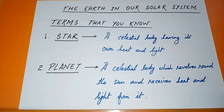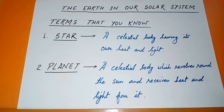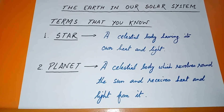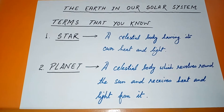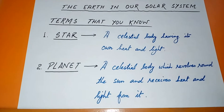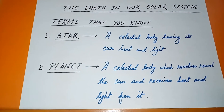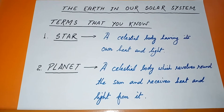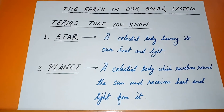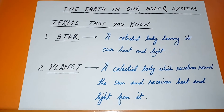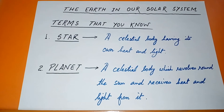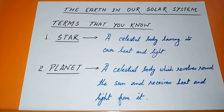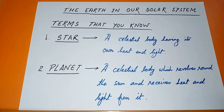The first known term is stars. A star is a celestial body having its own heat and light. Celestial bodies are those bodies which are seen only in the night time, and stars have their own heat and light.